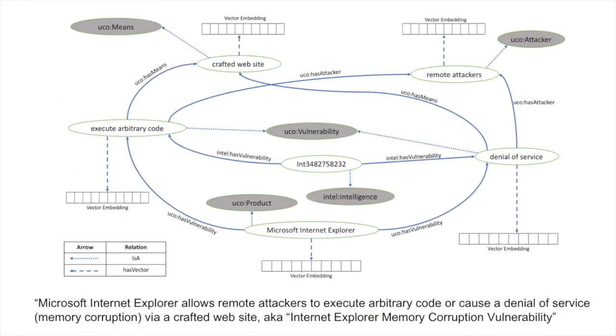Here we have an example for a VKG structure. The knowledge graph path asserted using Unified Cybersecurity Ontology includes the information that a product Microsoft Internet Explorer has a vulnerability to execute arbitrary code and denial of service that can be exploited by remote attackers using the means crafted website. The knowledge graph entities are linked to their vector embeddings using the relation has vector.